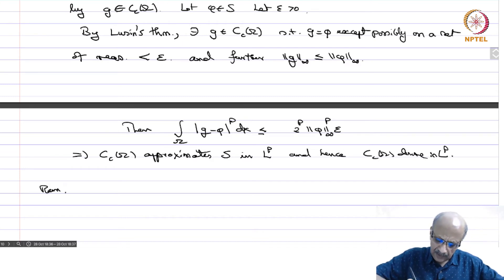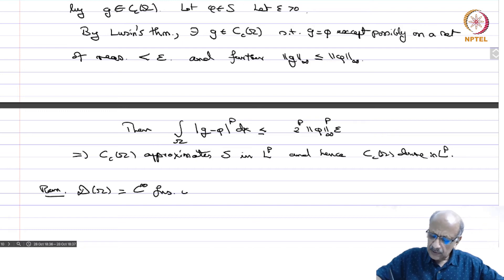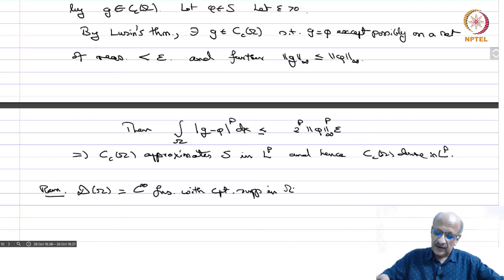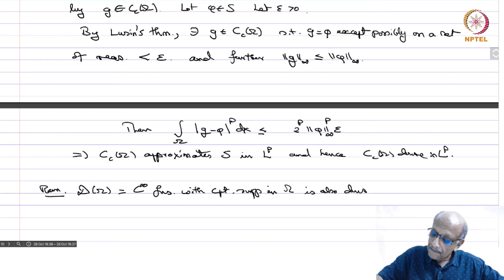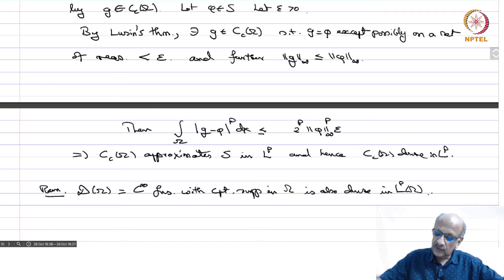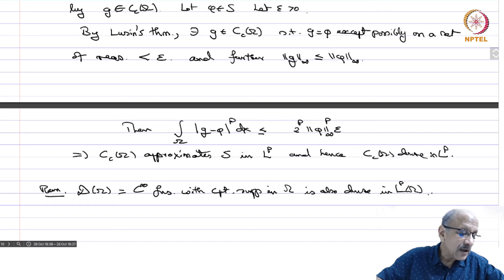Remark: In fact, D of omega — which is Cc infinity of omega, the C infinity functions with compact support in omega — is also dense in Lp of omega. This is a much smaller set than Cc of omega. But proving this requires more sophisticated tools from analysis like convolution, and we will not prove it here.